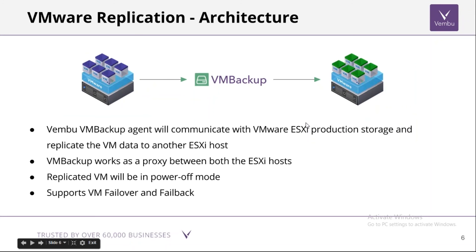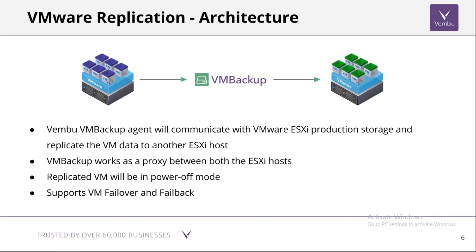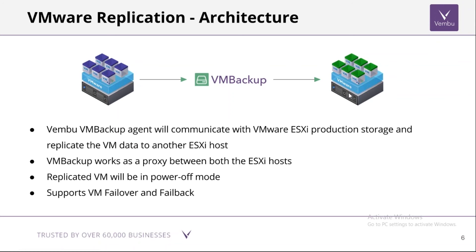Wambu VM Backup also provides VMware replication, where you can replicate a similar virtual environment for immediate failback and failover. The VM Backup Agent acts as a proxy between two ESXi hosts, replicating VMs from the source ESXi host to the destination ESXi host. The replicated VMs remain in a powered-off mode, and in case of any failure of the source VMs, you can perform immediate VM failover and failback.